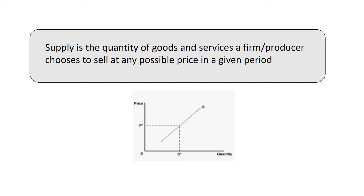Demand is related to the consumer and supply is related to the producer or firm. It's about the amount the firm is able to supply at a given price. A key reason for firms wanting to supply more of a product is profit. Another reason is lower costs. So firms are going to want to be in markets where they can command a higher price. Now let's take a look at some of the factors that affect the amount a firm would supply.